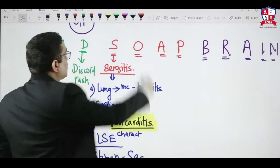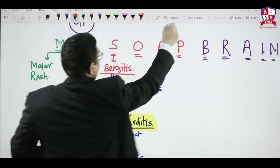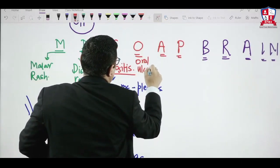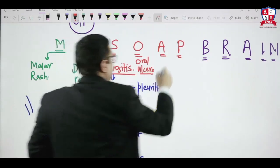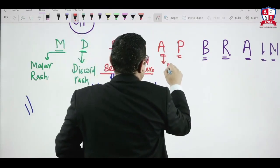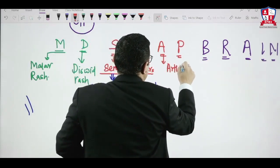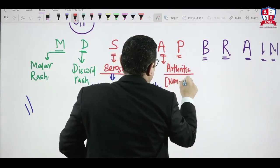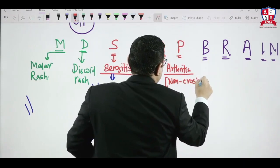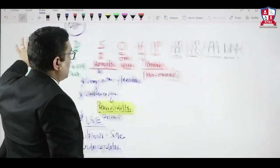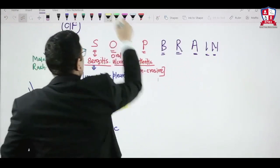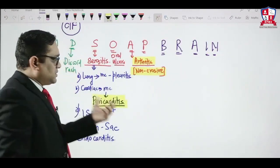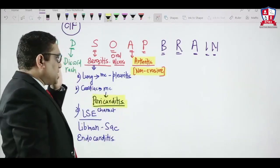O stands for oral ulcers. A stands for arthritis — this is non-erosive arthritis in SLE. This is an important exam question: the type of arthritis seen in SLE is non-erosive arthritis.